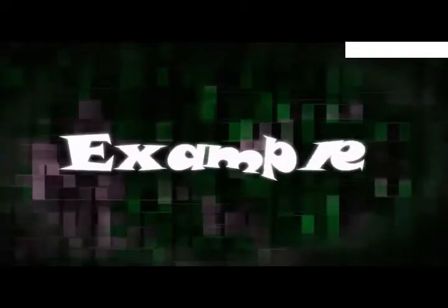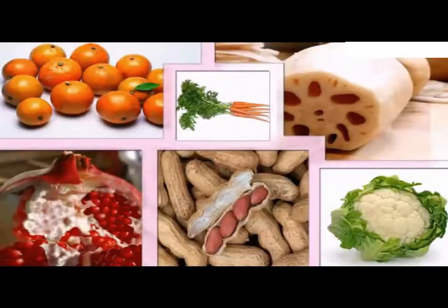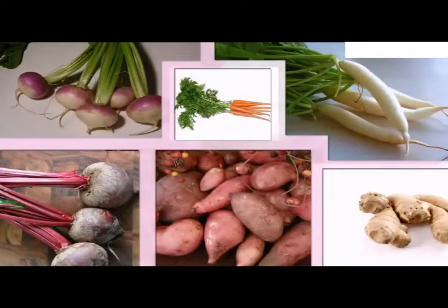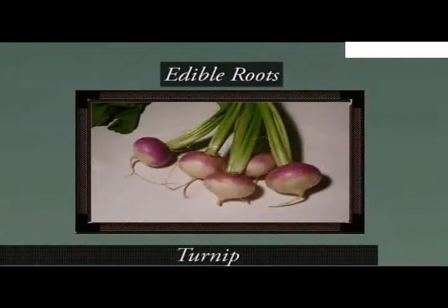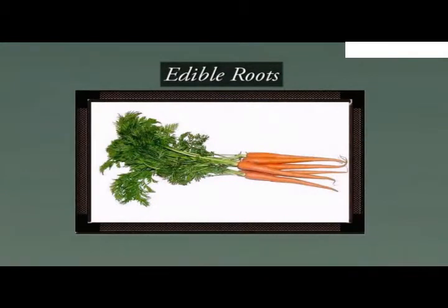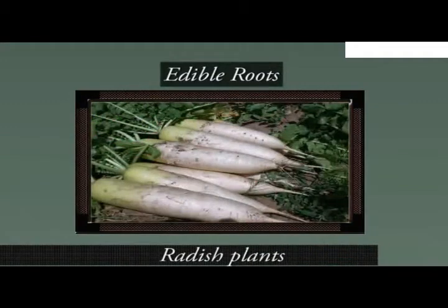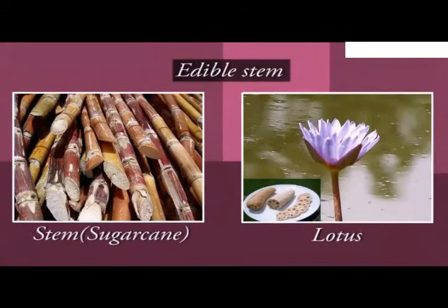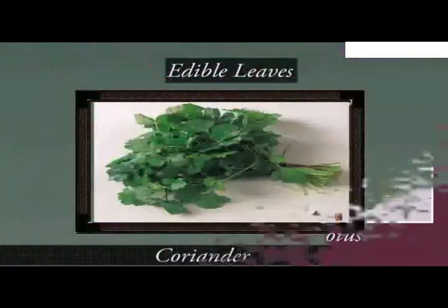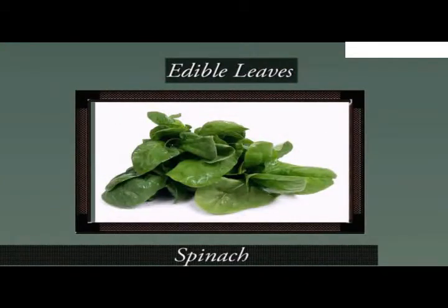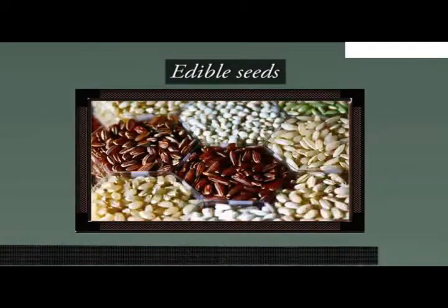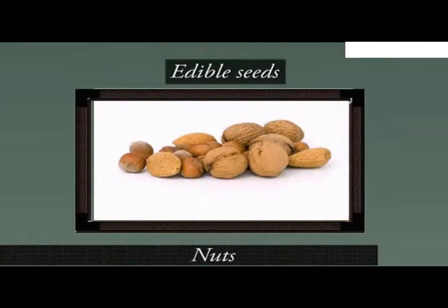Let us understand this better with the help of some examples. Apart from the various fruits and vegetables that we eat, there are other edible parts of plants consumed by humans as food. Take a look at these plants — these are turnip, carrot, beetroot and radish plants. What we consume are the roots of these plants. Similarly, we eat the stem of sugarcane and lotus. Leaves of coriander, spinach and mustard are consumed as food. The beans, cereals and nuts that we eat are the seeds of various plants.